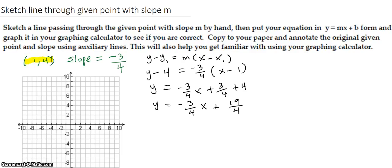So the point, the given point is 1 comma 4, and the slope is negative 3 fourths. So let's see if we can graph this.